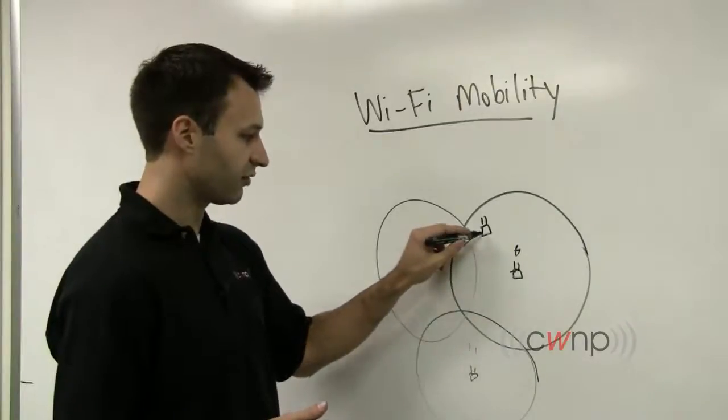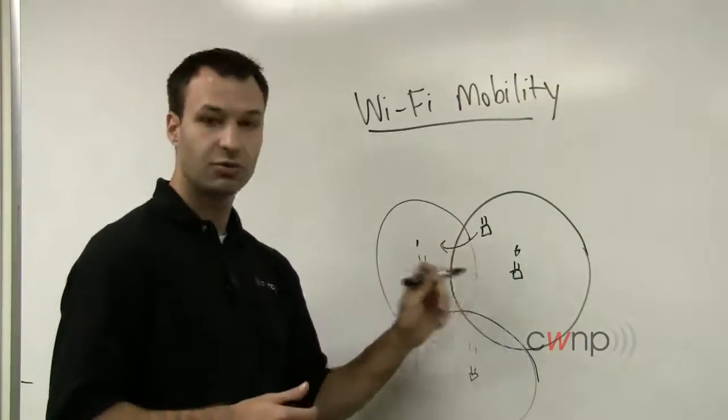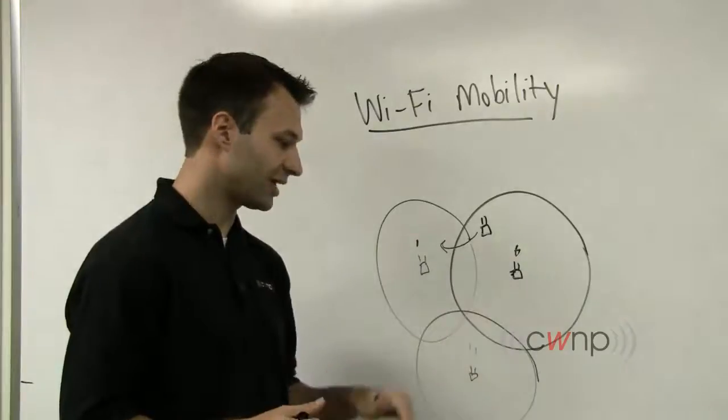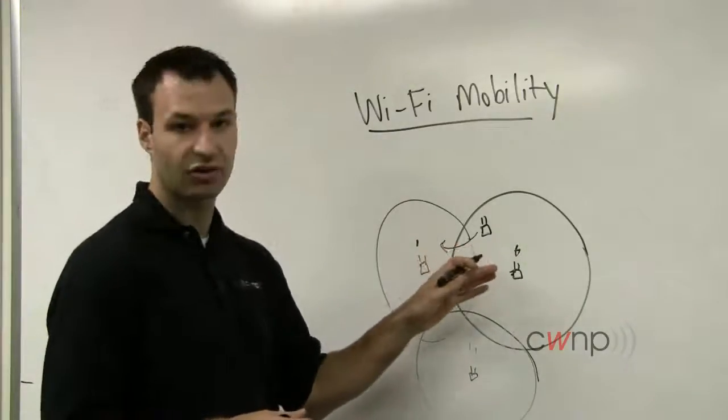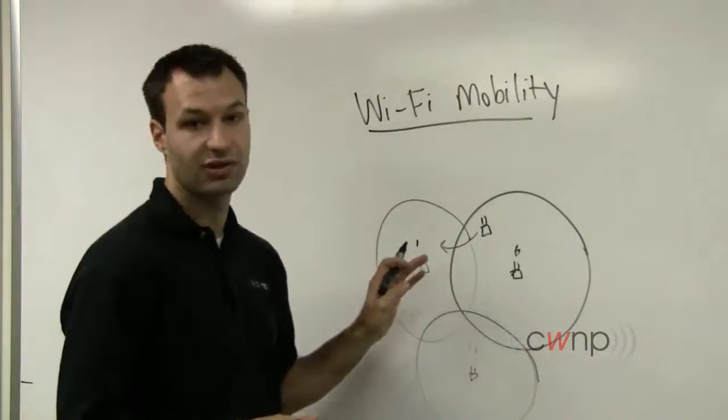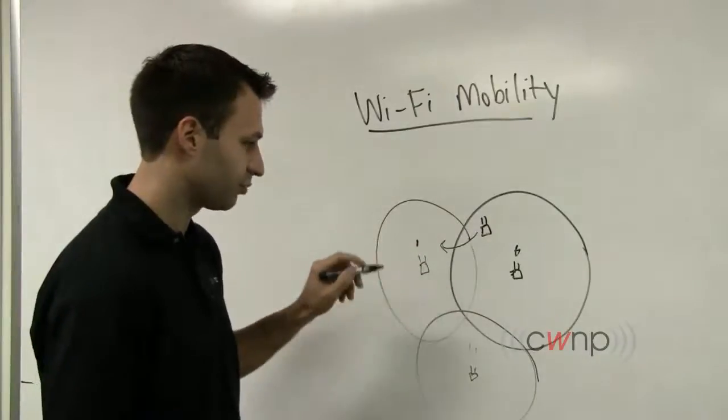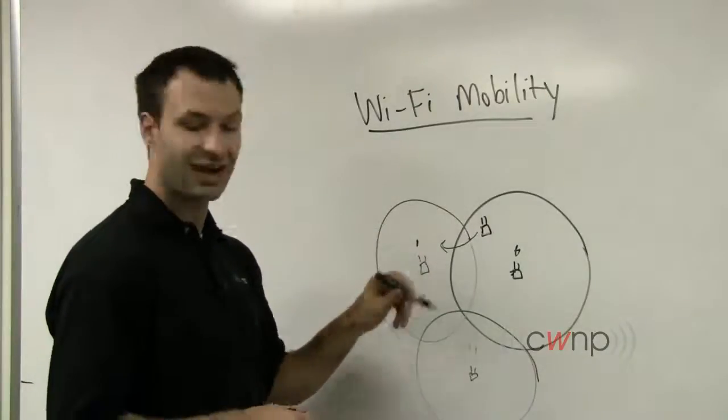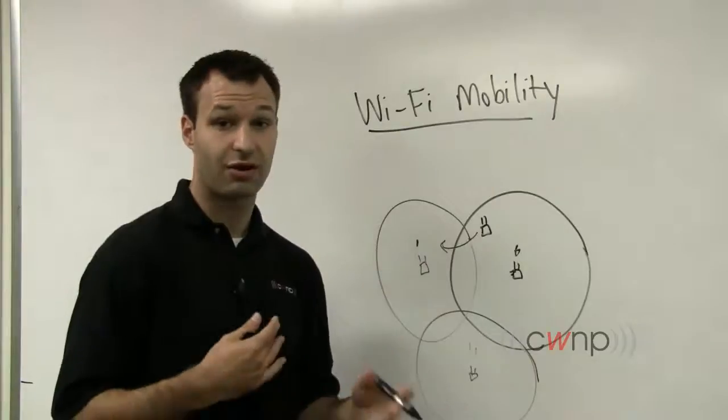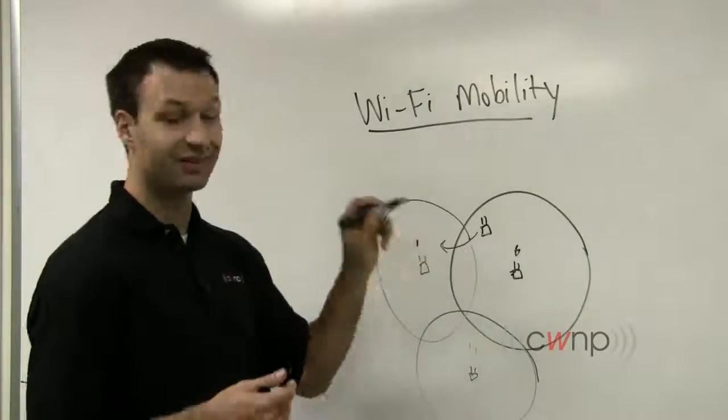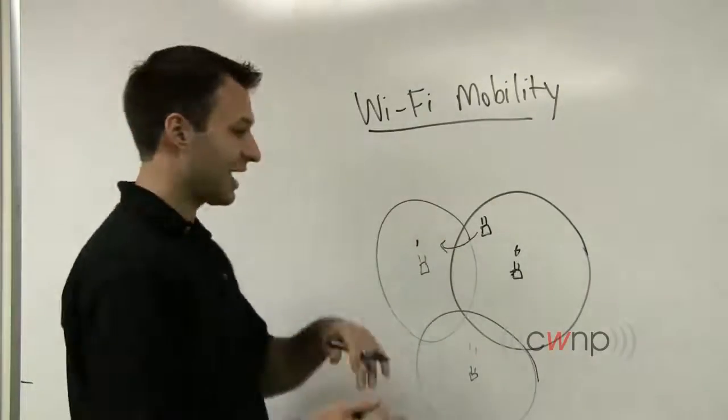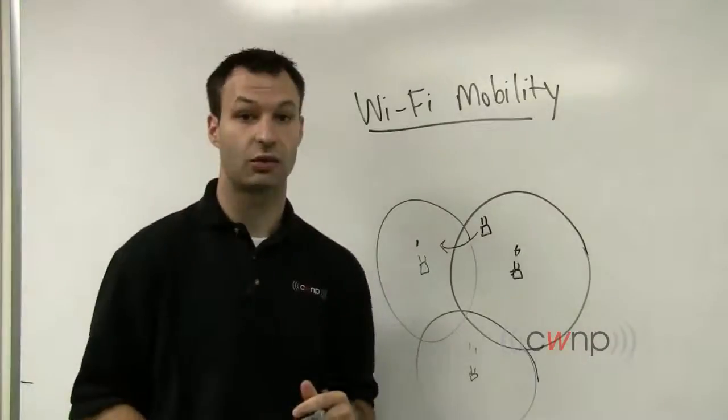So in order to roam, this client device has to cease communications with this access point. It can't continue communicating with that access point, and then all of a sudden be communicating with this access point. It has to both know about this access point on channel 1, and decide that that access point is going to be better for communication, and then it has to leave channel 6, and it has to take up communications on channel 1.